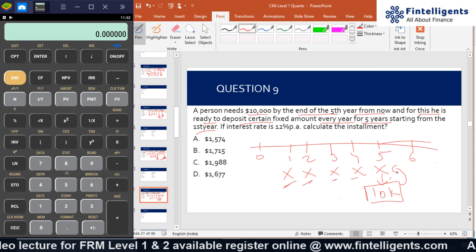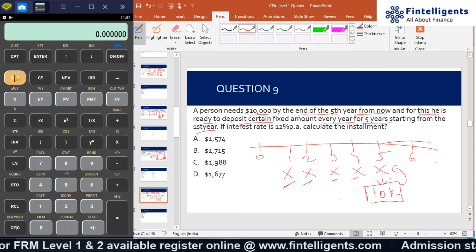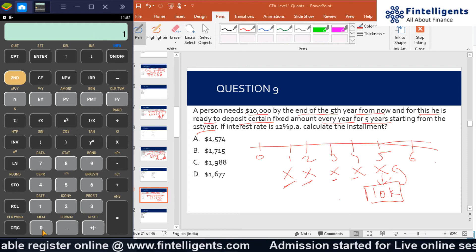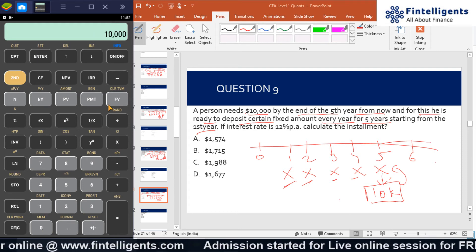You need to find the PMT. How will I do it? I will first input second FV. I will input $10,000 as the future value.